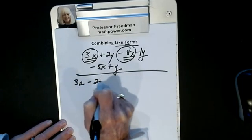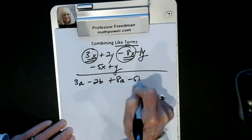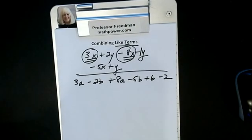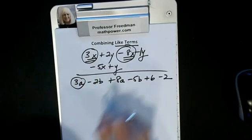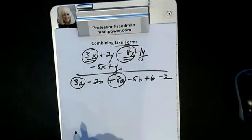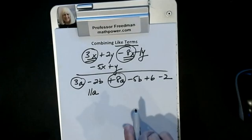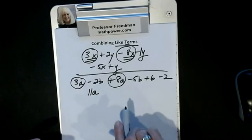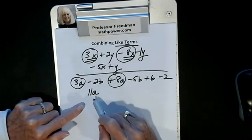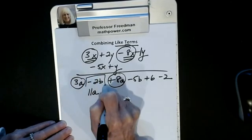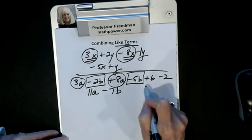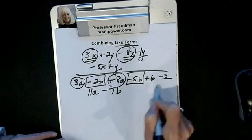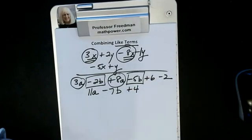Let's do another one: 3a minus 2b plus 8a minus 5b plus 6 minus 2. I combine any like terms. This is an a term and this is an a term — the signs are alike, so add and take the same sign: I get 11a. In adding and subtracting, which is combining like terms, we don't touch exponents. I combine my b's: minus 2b minus 5b gives minus 7b. For the constant terms, I have plus 6 and minus 2 — subtract, take the sign of the larger: I get plus 4.